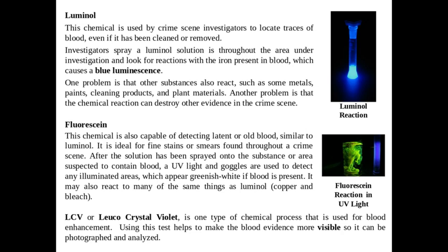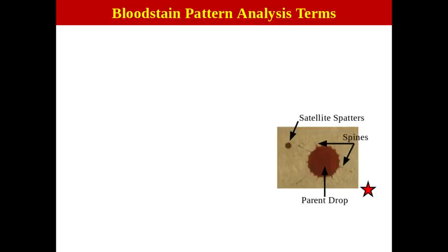So if blood is actually visible and identified as coming from a victim or assailant, how it hits the surface and what it does when it hits the surface is important. At this point we're going to look at blood stain pattern analysis — BPA.